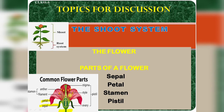Now let's talk about stamen. Stamen is the third whorl from outside; it is the male part of the flower. Each stamen has two main parts: filament and anther. The filament is the longer tube-like stalk that holds the pollen sacs.